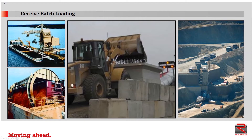This is an example where a hopper is used as an interface between batch and continuous. Here we see a clamshell shift unloader removing coal in batches, one clamshell load at a time. The material is deposited into a hopper and continuously feeds onto the dock conveyor.